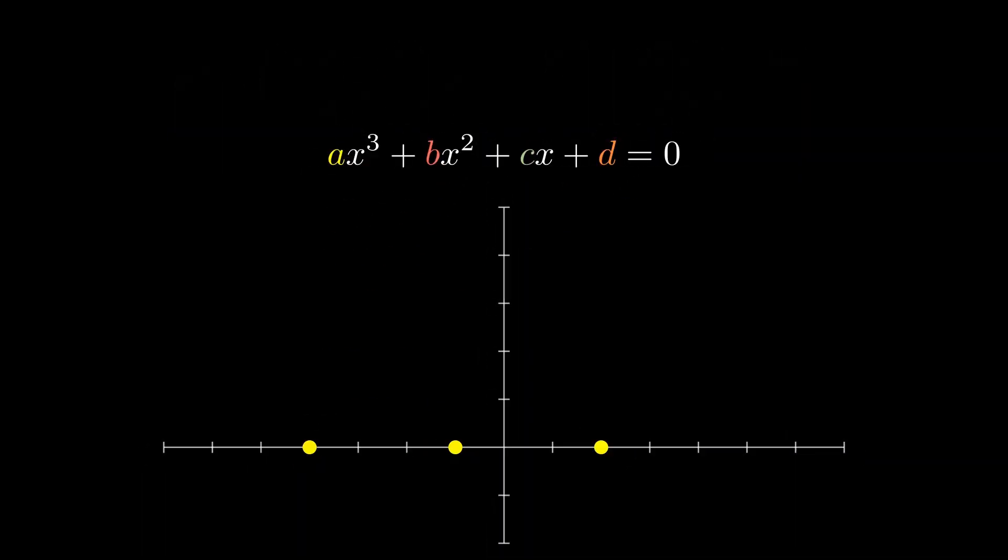We start by looking at something called the depressed cubic equation. Here, both m and n are constants. This is called the depressed cubic equation since we have an x³ term but no x² term. Now, since we're dealing with something cubed, it's only natural to visualize this problem using volumes.